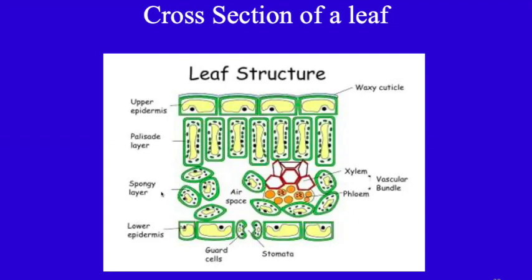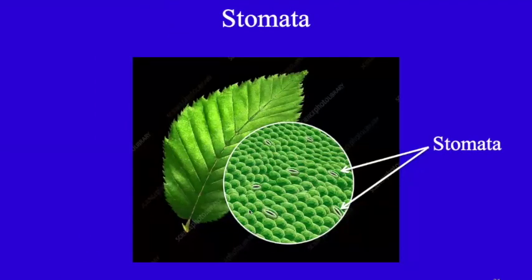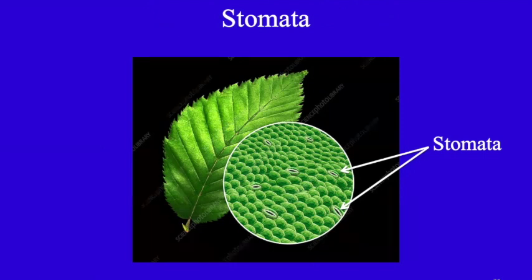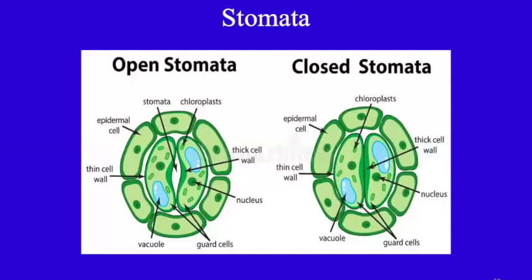The spongy layer contains the xylem and phloem, which are vascular bundles or conducting tissues. The stomata are on the lower surface of the leaf in larger numbers. If found on the upper surface, they are present in very few numbers.